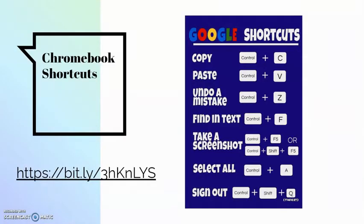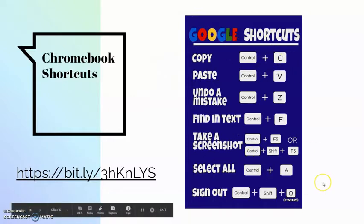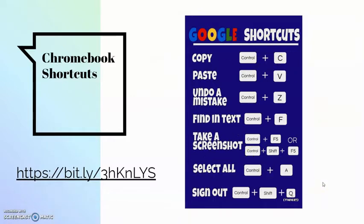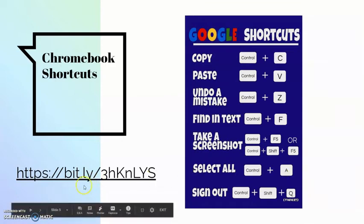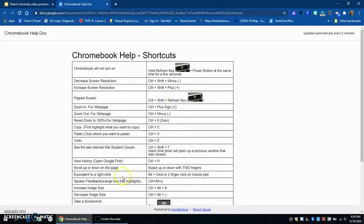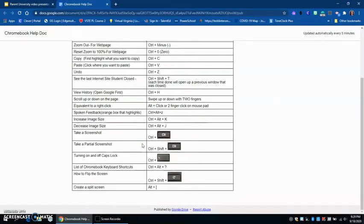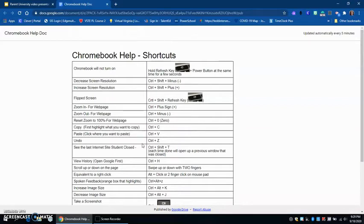The first thing I want to show you is a poster that you can take a picture of if you would like to have some very common shortcuts. Students can take a picture of this as well. The other option is this link right here: bit.ly/3HKNLYs. That is a link where you can go and print out this Chromebook help shortcuts worksheet — everything we're going to be talking about in this presentation — that you can have at your house for your students to help them.